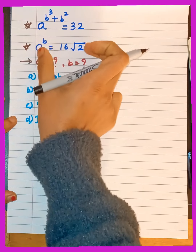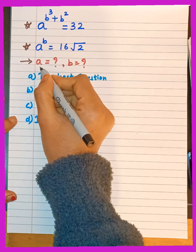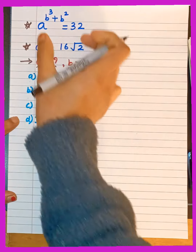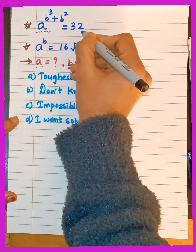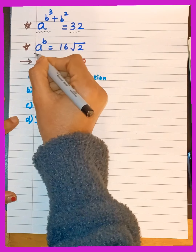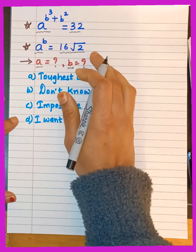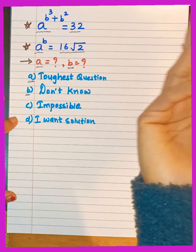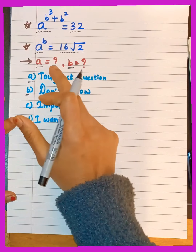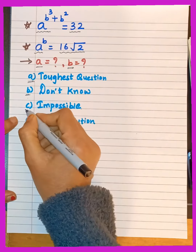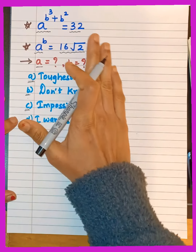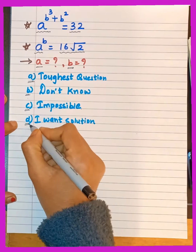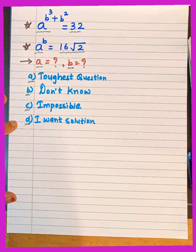With the help of these two equations, we will find out the value of a and b. The options presented are: it's too tough, we don't know, it's impossible to get fixed values for a and b, or we want a solution. I hope you all want the solution for this interesting question.